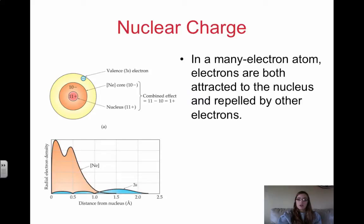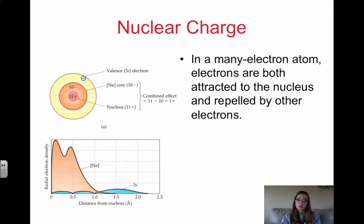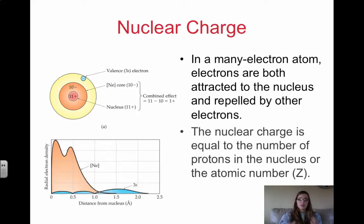To start, we're going to talk about nuclear charge. Nuclear charge and effective nuclear charge are different. In many-electron atoms — so anything except hydrogen — electrons are both attracted to the nucleus but also repelled by other electrons. The nuclear charge is simply the atomic number; it's equal to the number of protons in the nucleus. So Z, which is the atomic number, is the nuclear charge.